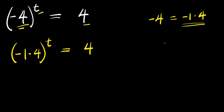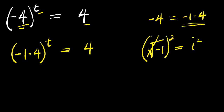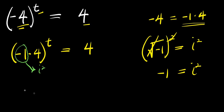Now, don't forget the fact that the square root of negative 1 equals the imaginary number i. So if you take this square root, negative 1 equals i squared. That means we have negative 1 here and we are going to replace it with i squared. So we now have i squared times 4 raised to the power of t, and this equals 4.